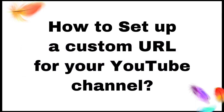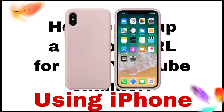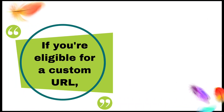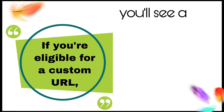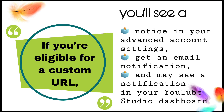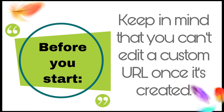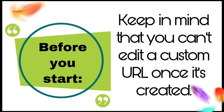Here we go — how to set up a custom URL for your YouTube channel using iPhone. If you're eligible for a custom URL, you will see a notice in your advanced account settings, get an email notification, and may see a notification in your YouTube Studio dashboard. Before you start, keep in mind that you cannot edit a custom URL once it's created.